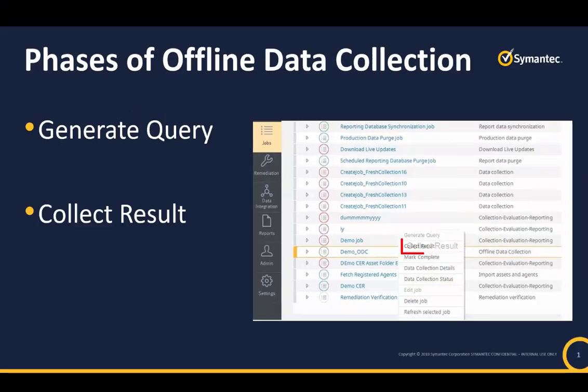The second phase is Collect Result. In this phase the data collected by the agent is imported to the CCS manager and stored in the production database. You can run the job in this phase several times until you complete this step for all the agents that are part of the ODC job.